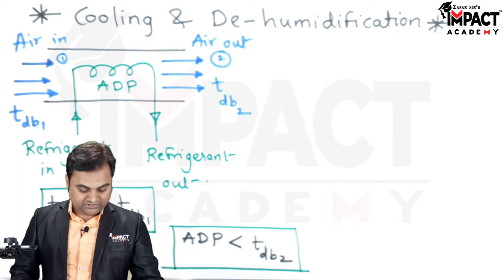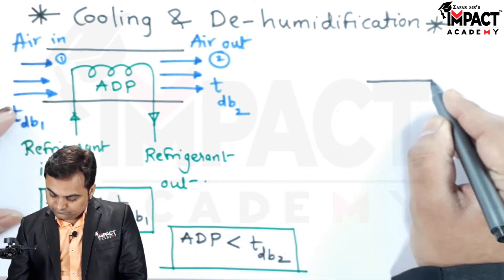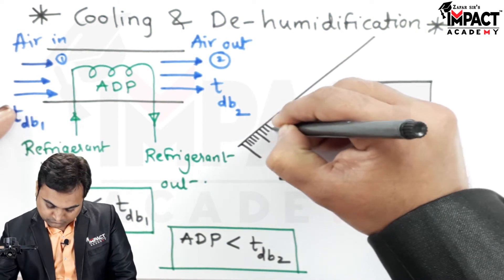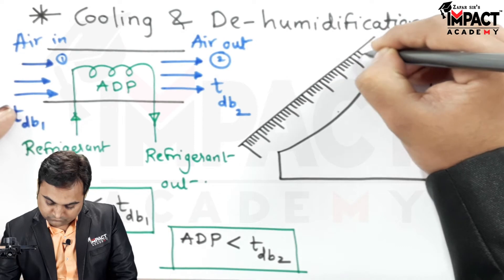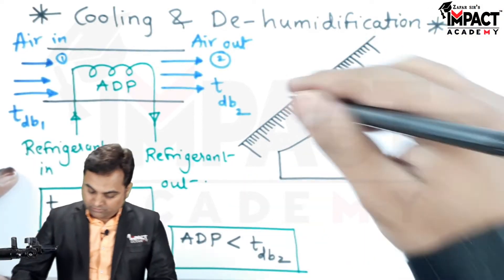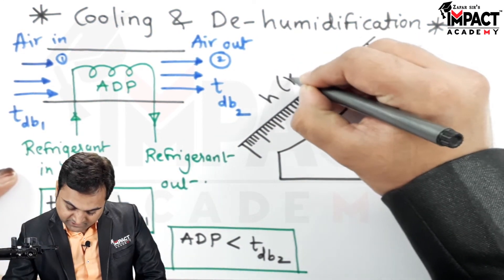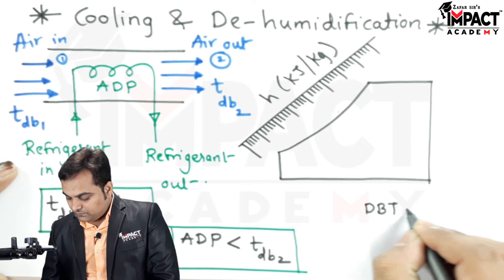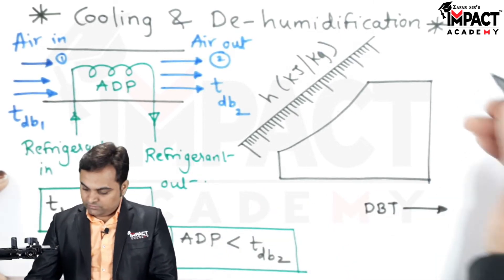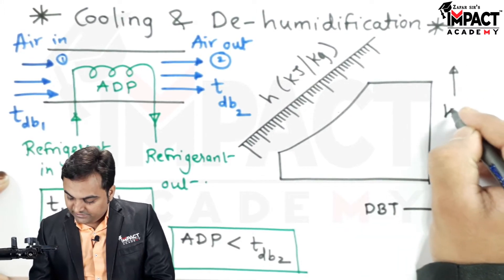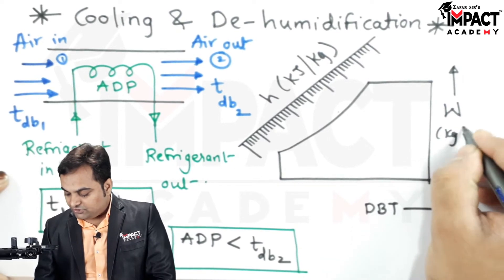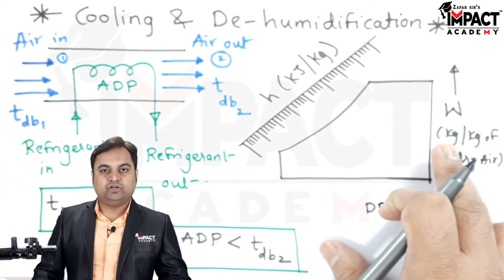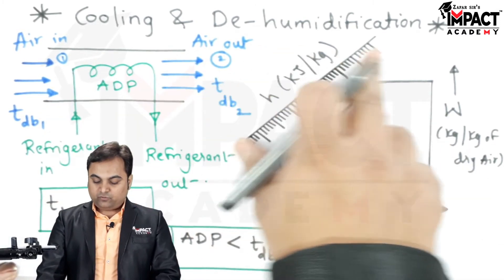Plotting it onto the psychrometric chart, I will draw the psychrometric chart roughly over here. This scale indicates the specific enthalpy for air — notation is small h, unit is kilojoule per kg. This horizontal axis indicates the dry bulb temperature of air, going from left to right. On the vertical axis is specific humidity, denoted by W, unit kg per kg of dry air — meaning in 1 kg of dry air, how much kg of moisture or water vapor is present.